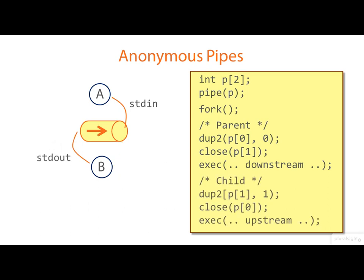The child process—that is B in the picture—is going to become the upstream process. So it duplicates the upstream end of the pipe onto file descriptor one, which is its standard output. It then closes the descriptor on the downstream end.